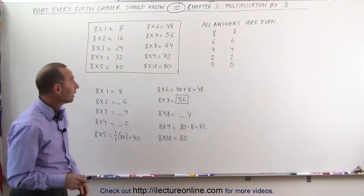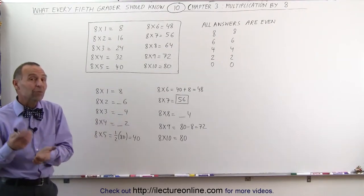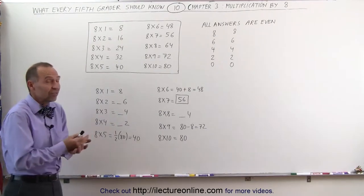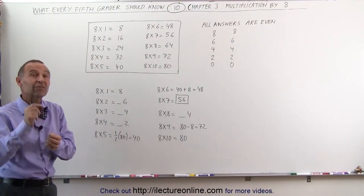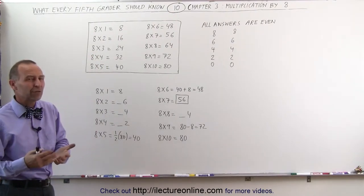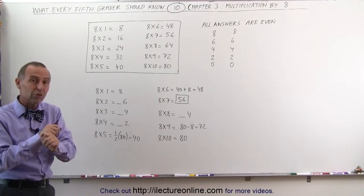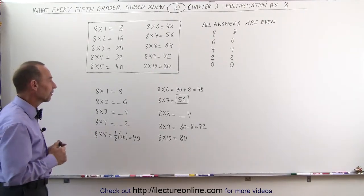Always remember that 8 times 2 is the same as 2 times 8, and 8 times 3 is the same as 3 times 8, and even though it says 8 times 3, it may be easier to remember that 3 times 8, which is equal to 24. And sometimes just reversing the two numbers helps us figure out what the number is.